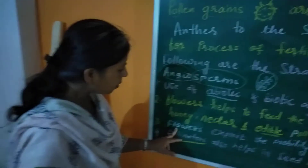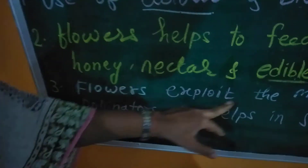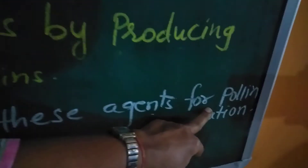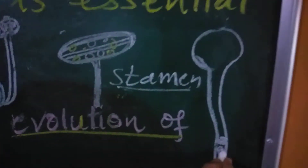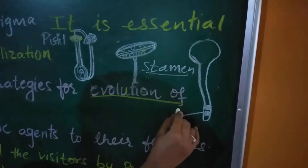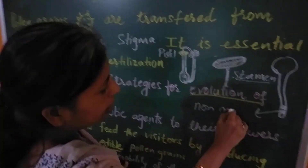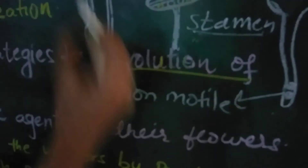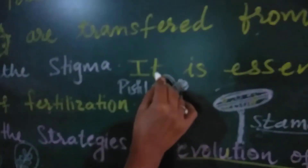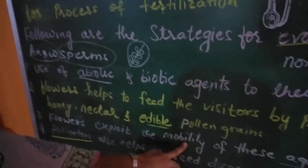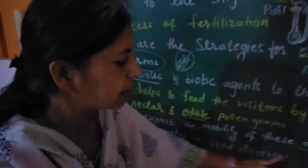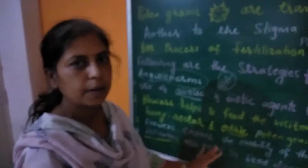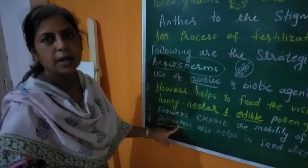Flowers exploit — meaning they use — the mobility of these agents for pollination. The male gametes produced inside the pollen grain are non-motile, so they are carried with the help of these agents towards the stigma. This mobility is exploited by the flowers. Another strategy is that pollinators also help in seed dispersal, meaning seeds can be transferred from one place to another with the help of pollinators.